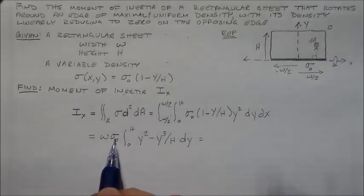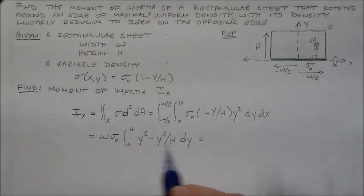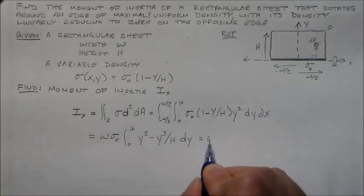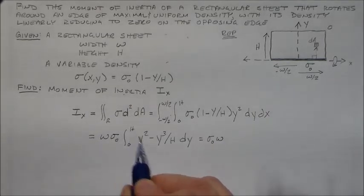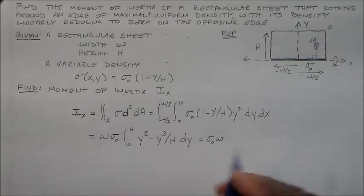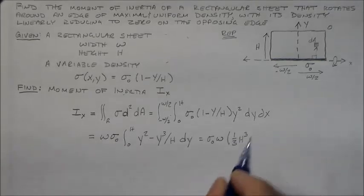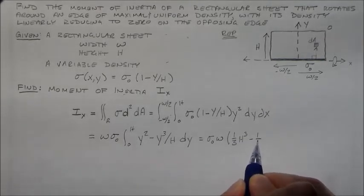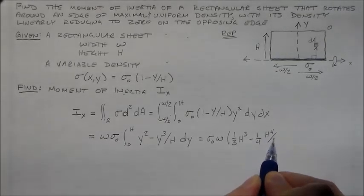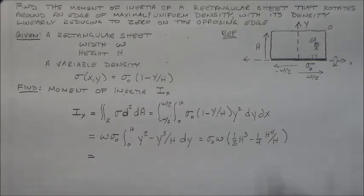So now I've got sigma naught and w. I divide or integrate y squared, and that's one-third h cubed. And then we subtract 0 from that, so we don't have to worry about that. And then we subtract one-quarter h to the fourth over h, which is still an h cubed. So nothing strange or mind-blowing has happened.